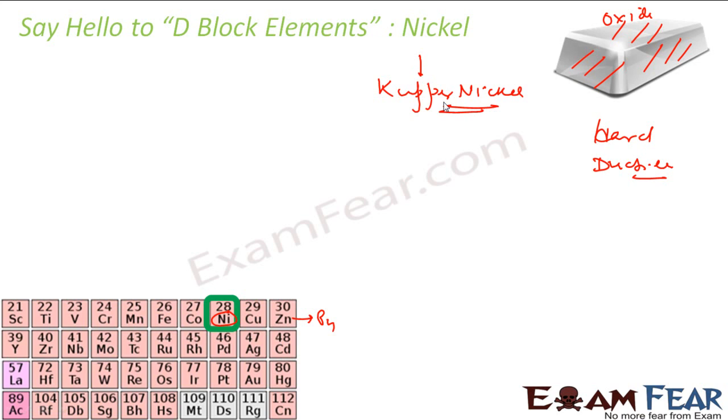So nickel means actually what? Nickel means enemy, devil, devil in German. And this is called copper enemy.